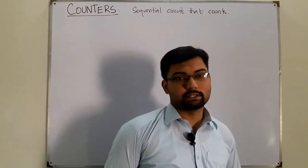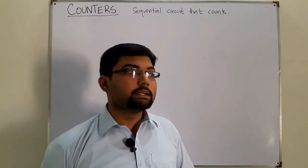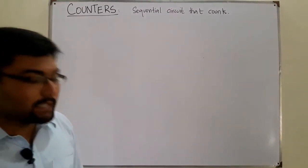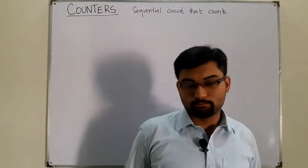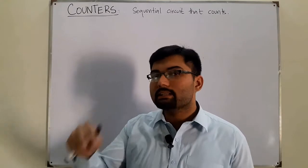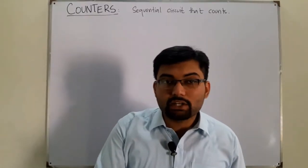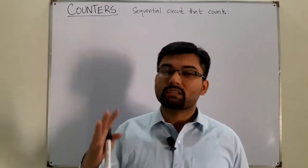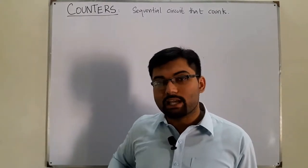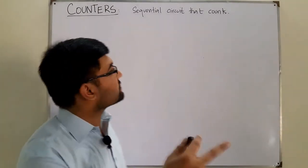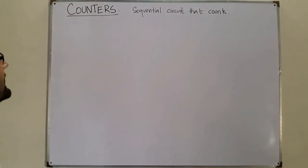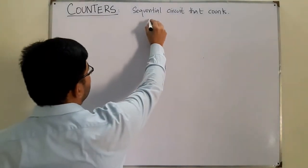This definition could sound a little confusing, but counting means starting from zero, then one, then two, then three. A sequential circuit means the present state depends on the value of the previous state. If I have to count from zero to five and I'm at position three, I need to know position three to go to position four — that's why we need the previous state along with the present inputs. This is also called a frequency divider circuit.